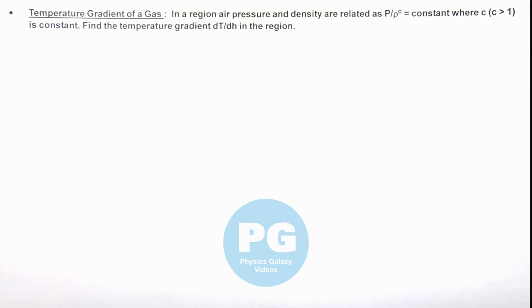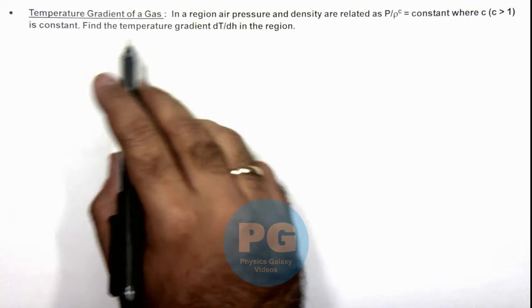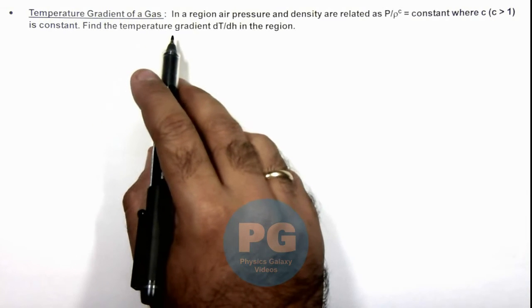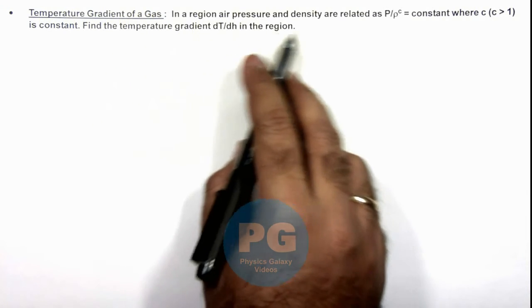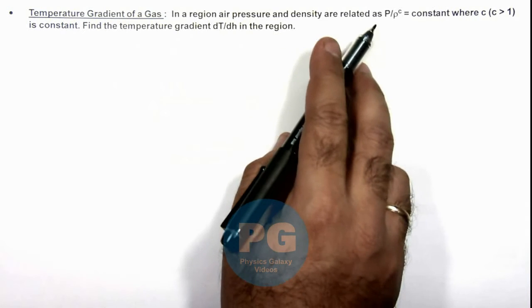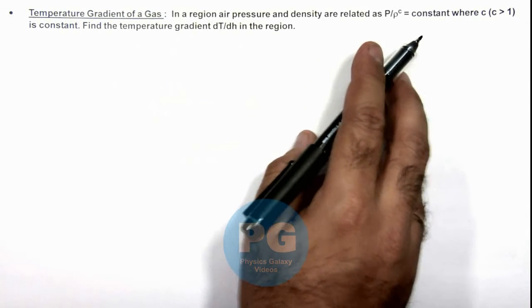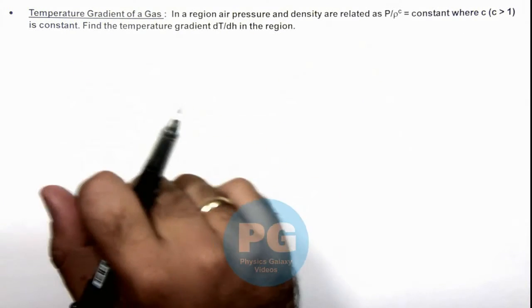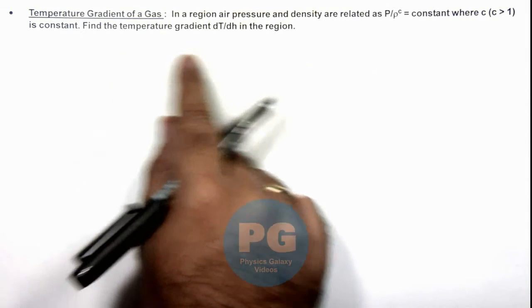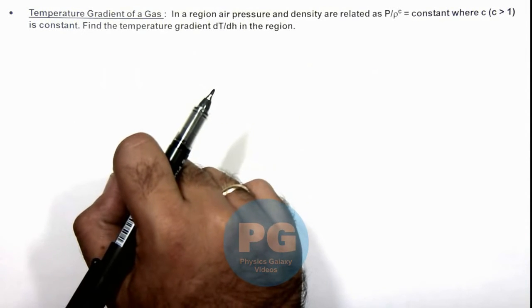In this illustration, we'll analyze the temperature gradient of a gas. We are given that in a region air pressure and density are related as p by ro to power c is constant, where c is greater than 1 is a constant. We are required to find the temperature gradient d t by d h in the region.